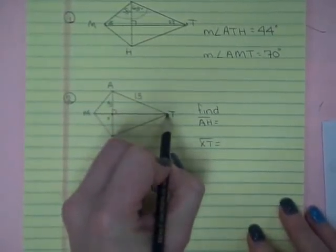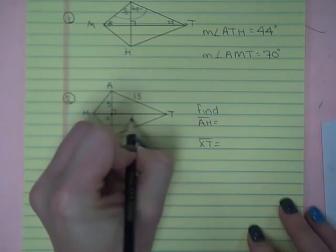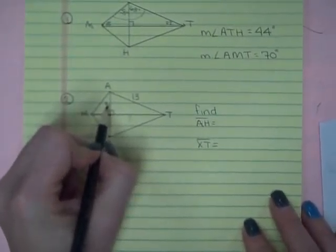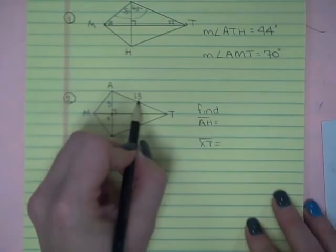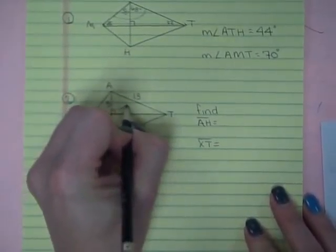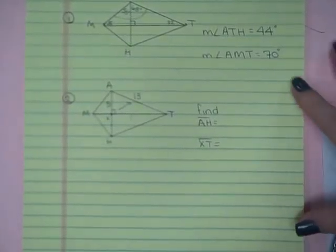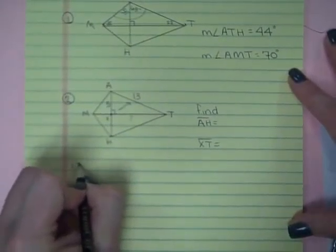If I want to find X to T, here's my unknown. I have one leg of a right triangle. I have the hypotenuse of a right triangle because that's the piece across from the 90 degrees. I can solve using Pythagorean theorem.